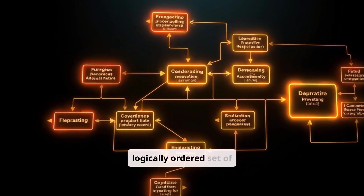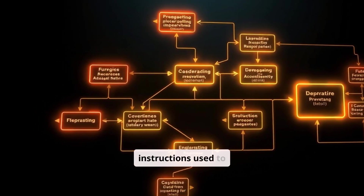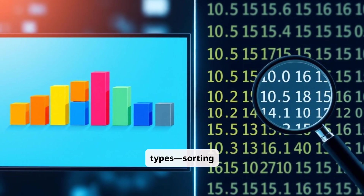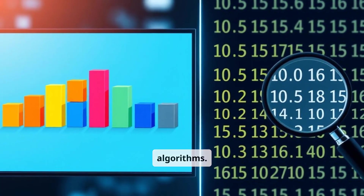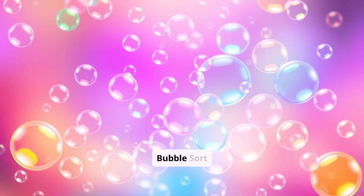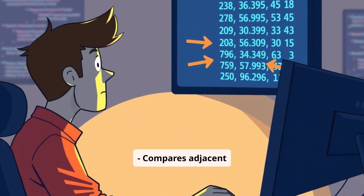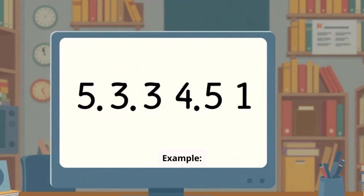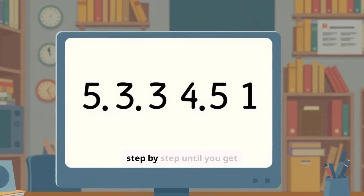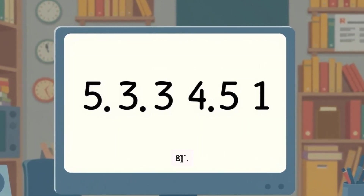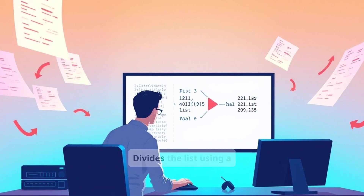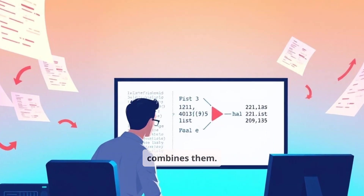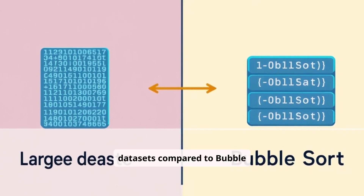An algorithm is a logically ordered set of instructions used to solve a problem. Let's discuss two essential types: sorting and searching algorithms. Sorting algorithms: Bubble sort — compares adjacent items and swaps them if they are in the wrong order. Example: sorting [5, 3, 8, 1] step-by-step until you get [1, 3, 5, 8]. Quick sort — divides the list using a pivot, sorts smaller and larger parts, and combines them. Much faster for large datasets compared to bubble sort.